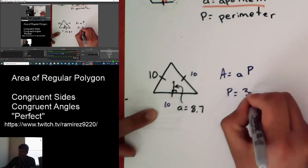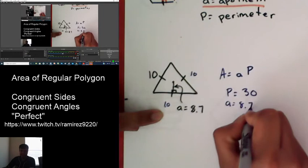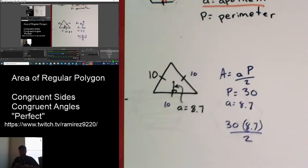My apothem is from the center of the figure, perpendicular to a side. And they're currently telling us that it is already 8.7. Let's not forget we have to divide by 2. And so now all we have to do is just do 30 times 8.7. And we just need to divide that by 2. And that's it.